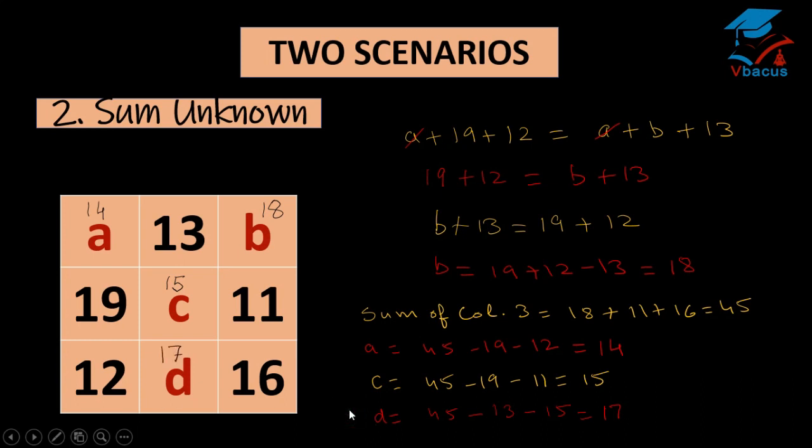So we can check column wise, row wise and diagonally. So 14 plus 13 plus 18 is 45. Column wise, 18 plus 11 plus 16 is also 45. Diagonally we can check 14 plus 15 plus 16 that is 45. So we have found the values of A, B, C and D. These types of questions definitely come in the competitive exam.